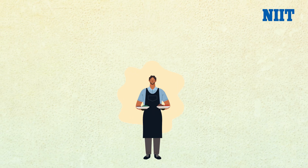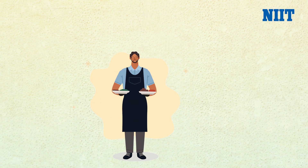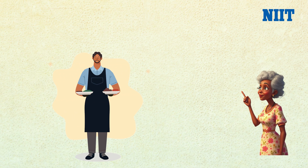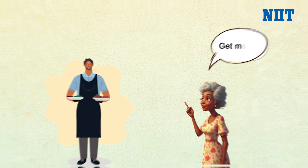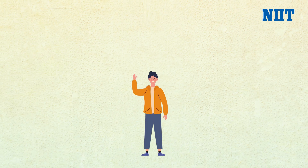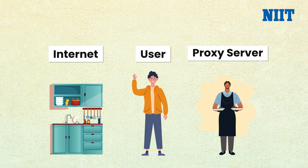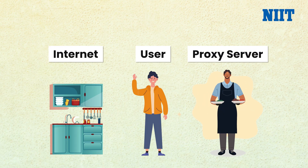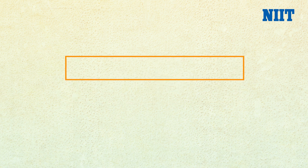Think of it like a waiter in a restaurant. You don't go to the kitchen yourself. You tell the waiter what you want and they bring it to you. In this case, you're the user, the kitchen is the internet, and the proxy server is your waiter. You never deal with the kitchen directly, and that's exactly how proxies work on the internet.